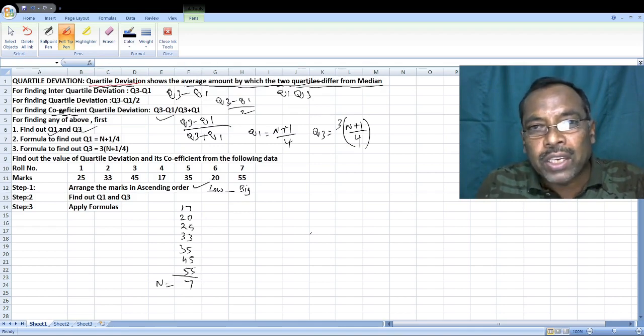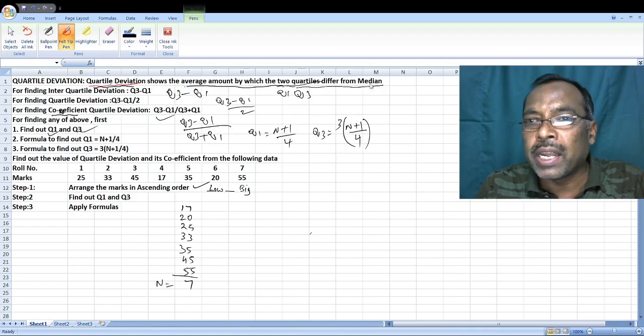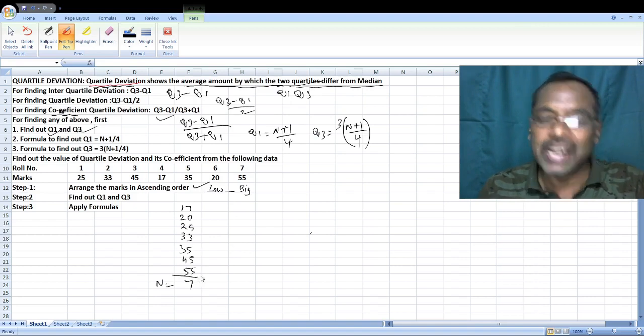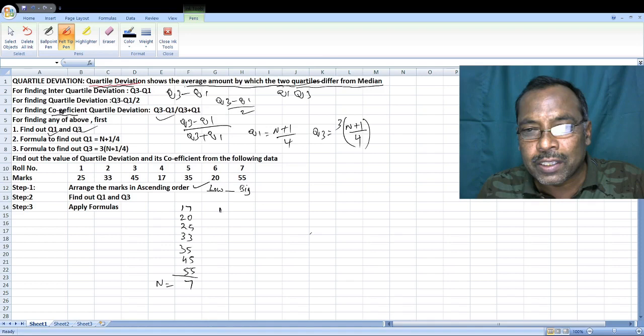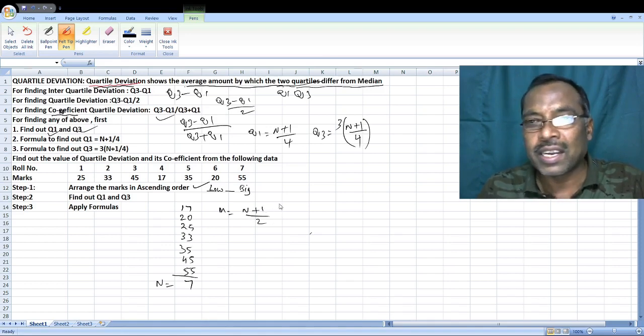Quartile deviation shows the average amount by which the two quartiles differ from median. First find the median. What is the formula for median? M is equal to n plus 1 by 2.